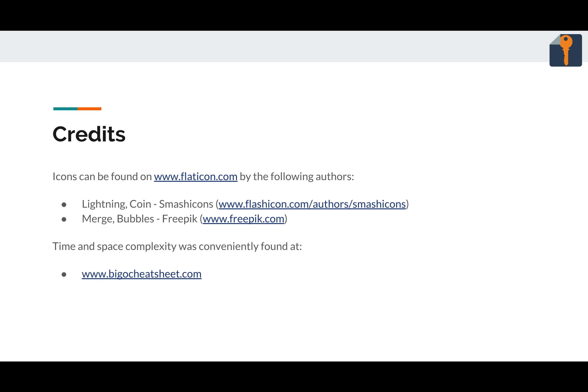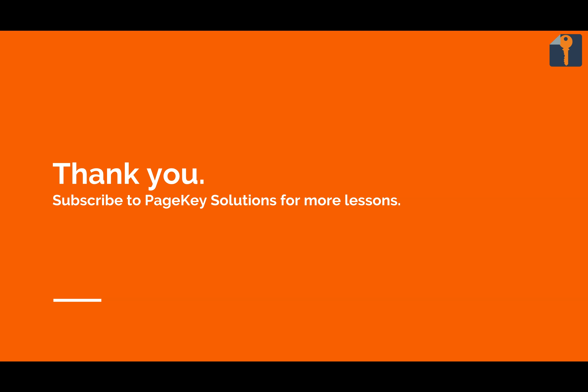It's the last episode in the series, but I still have to give credit to those who helped out. I appreciate the free icons on flaticon.com. I got the various icons throughout the lessons from these people on there. Smash icons and Freepik. Check them out. And time and space complexity was found at bigocheatsheet.com. Thanks again. Subscribe to Page Key Solutions for more lessons. We'll be going through some cool new stuff soon. And thanks for watching.